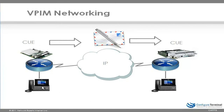So basically the same process takes place. Let's assume extension 1000 on the left-hand side dials into its voice messaging system by pressing the messaging button on the phone, then does a lookup for a user, records a message in exactly the same way as I've just demonstrated. The message is then emailed using SMTP to the other voice messaging system. But this goes a step further, because this phone's MWI will light up in exactly the same way as I demonstrated when the phones were on a single system.